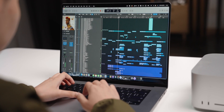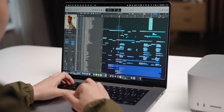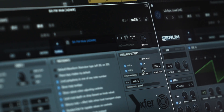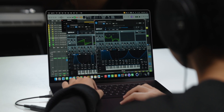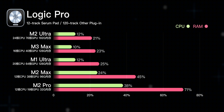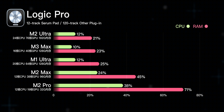For arrangement testing, all five Macs ran complex Logic Pro demo projects smoothly, with no issues for arrangement and composition. We loaded a very CPU-intensive synth plugin — replacing pad tracks with Serum at 4x oscillator settings — running 12 Serum pad tracks and 120 other tracks simultaneously with buffer size 32. M2 Ultra used 12% CPU and 21% memory; M3 Max used 10% CPU and 23% memory; M1 Ultra used 12% CPU and 25% memory; M2 Max used 24% CPU and 45% memory; M2 Pro used 38% CPU and 71% memory. Below this limit, only the M2 Pro Mac Mini occasionally stuttered; the other four Macs handled it fine.